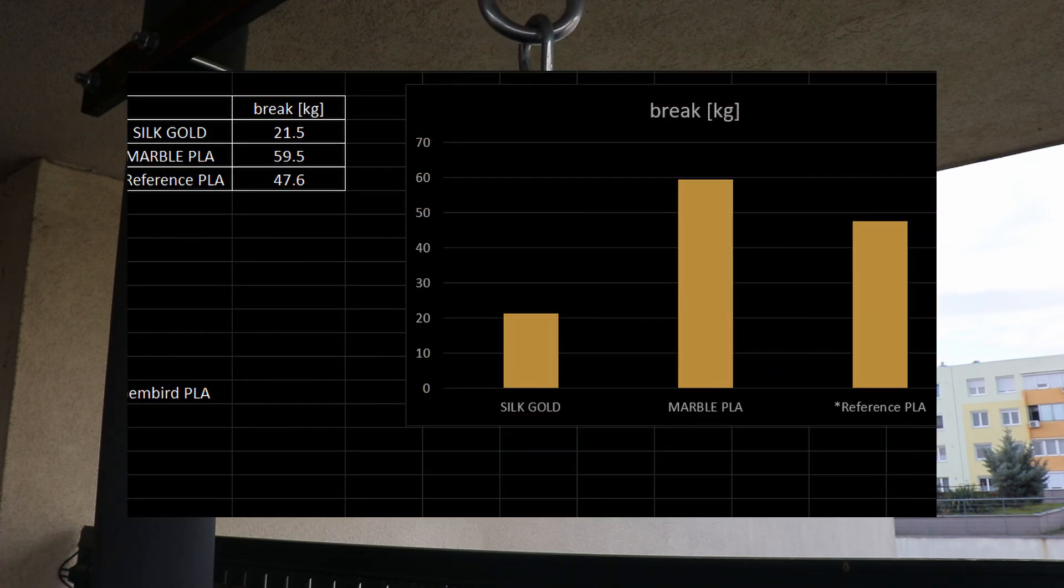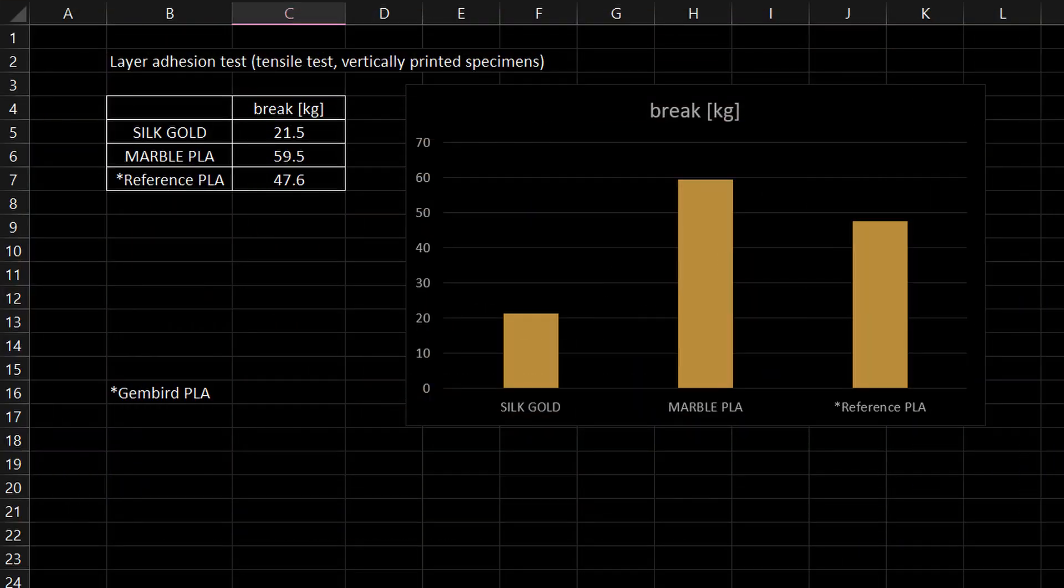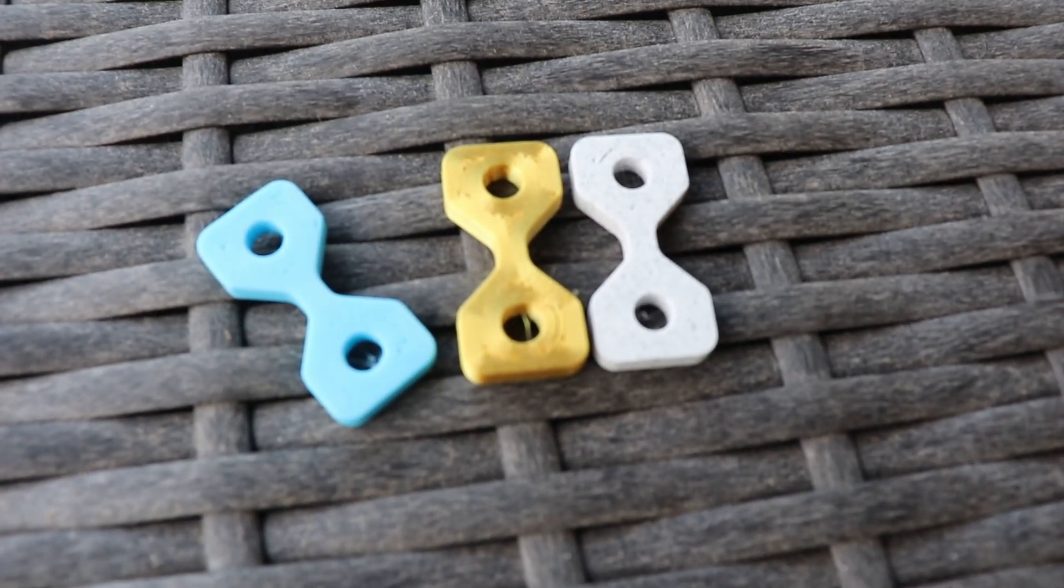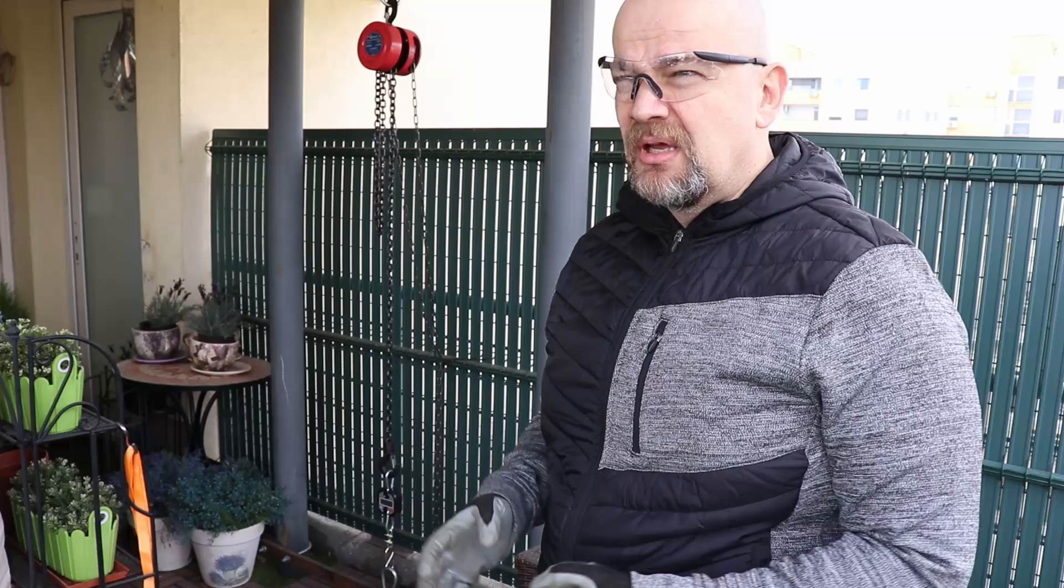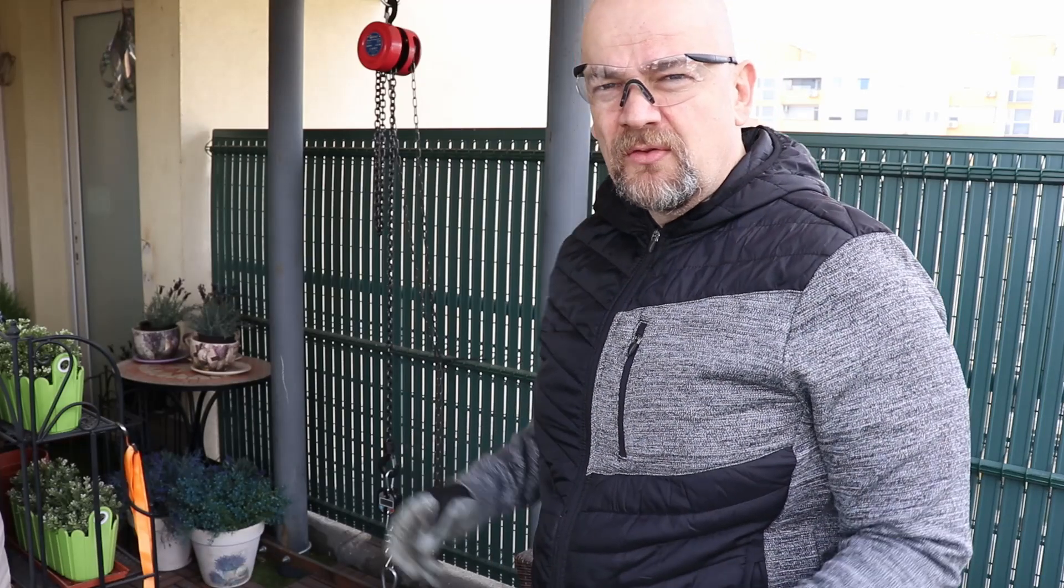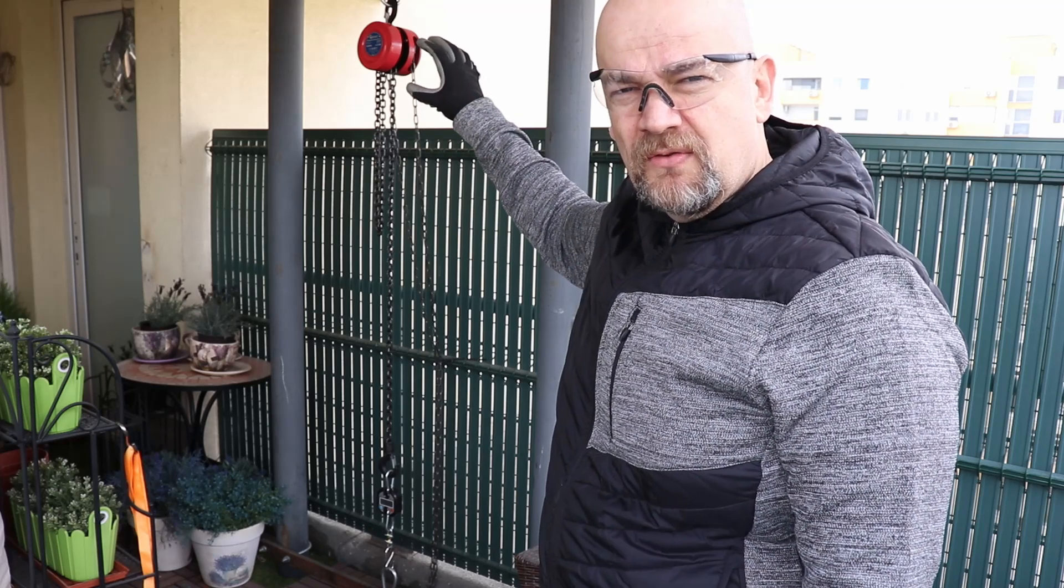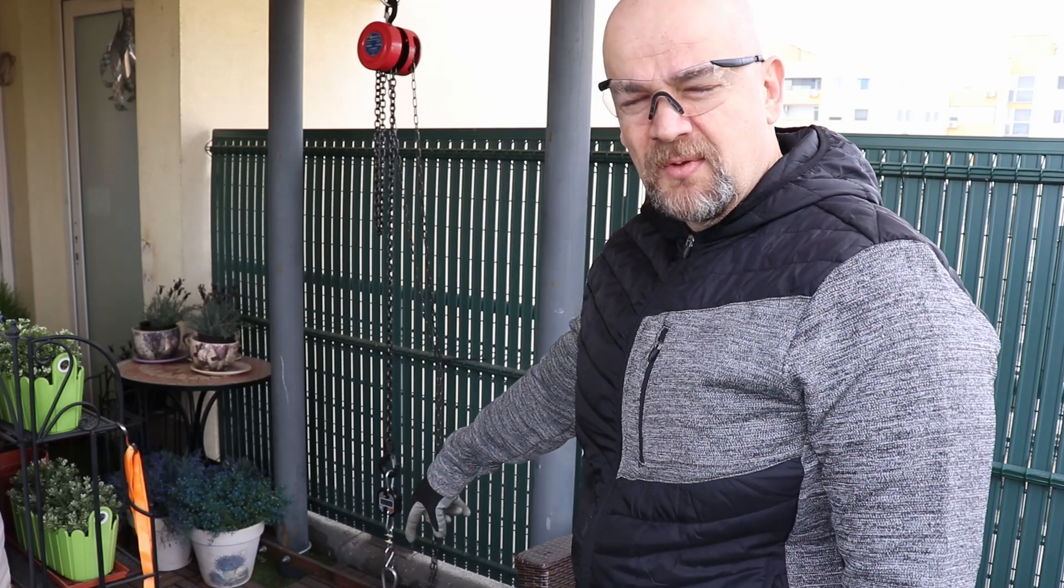Silk gold had the weakest layer adhesion, but of course this filament is not designed for mechanical parts. And these are printed in horizontal position to check the material properties. Here I will have some bigger loads, so I will use a chain hoist.